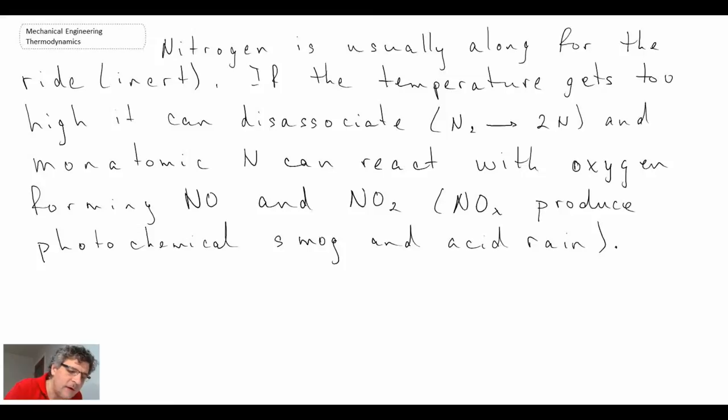Nitrogen is typically along for the ride, so it's not really reacting. It's what we would call an inert gas. But sometimes in the reaction zone, if the temperature gets too high, the diatomic nitrogen can dissociate into two single monatomic nitrogens. Then those look for other bonds, and quite often oxygen is available. Then we get the formation of nitrous oxide and NO2, or NOx, as they are commonly referred to when we talk about pollution.